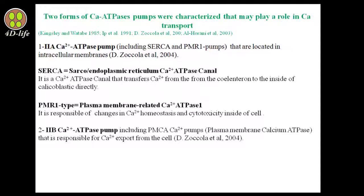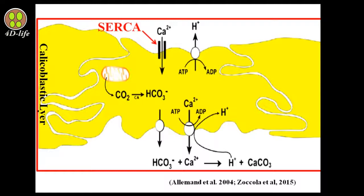The second type is the 2B calcium ATPase pump, including PMCA — plasma membrane calcium ATPase — which is responsible for calcium export from the cell. As seen in this picture, SERCA transfers calcium from the coelenteron to the calicoblastic layer, and PMR1 exports hydrogen to the coelenteron. PMCA is responsible for calcium export to the skeleton, where calcification occurs by the reaction of calcium with bicarbonate or free carbonate ions already taken up by the coral.